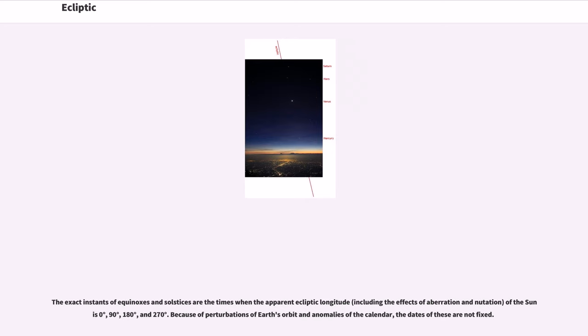The exact instances of equinoxes and solstices are the times when the apparent ecliptic longitude, including the effects of aberration and nutation, of the Sun is 0 degrees, 90 degrees, 180 degrees, and 270 degrees. Because of perturbations of Earth's orbit and anomalies of the calendar, the dates of these are not fixed.